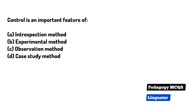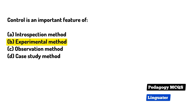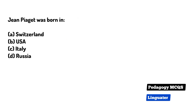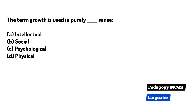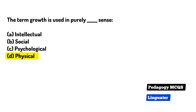Control is an important feature of the experimental method. Jean Piaget was born in — the right answer is Switzerland. The term growth is used in a purely physical sense.